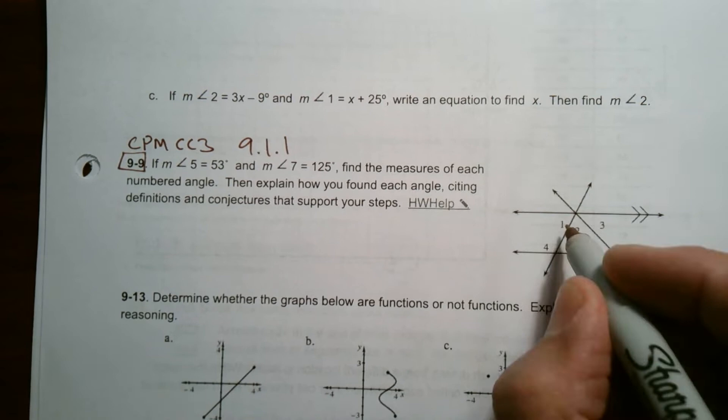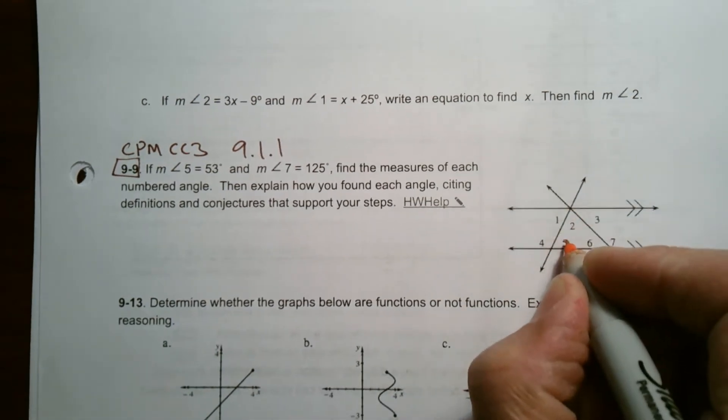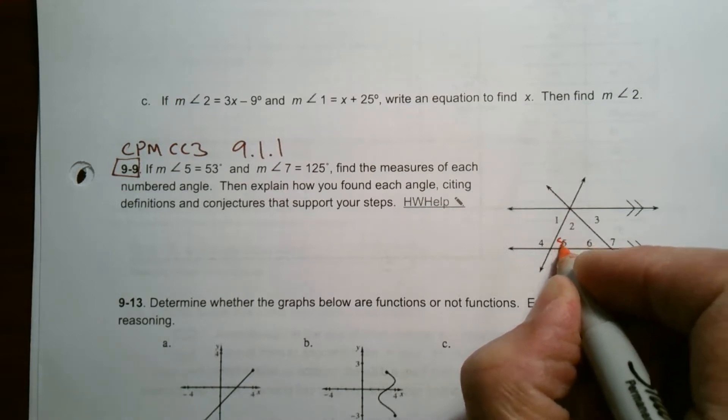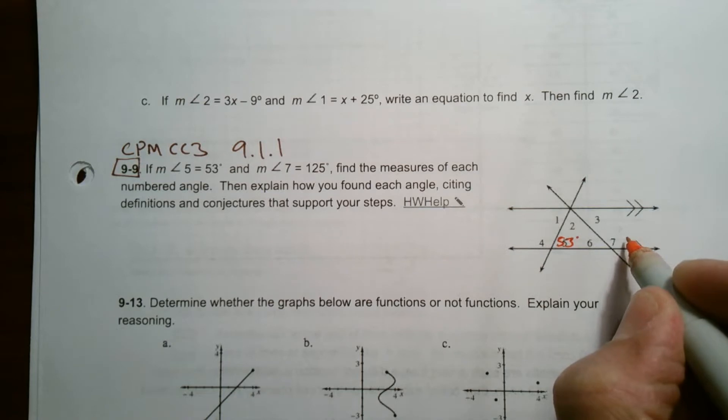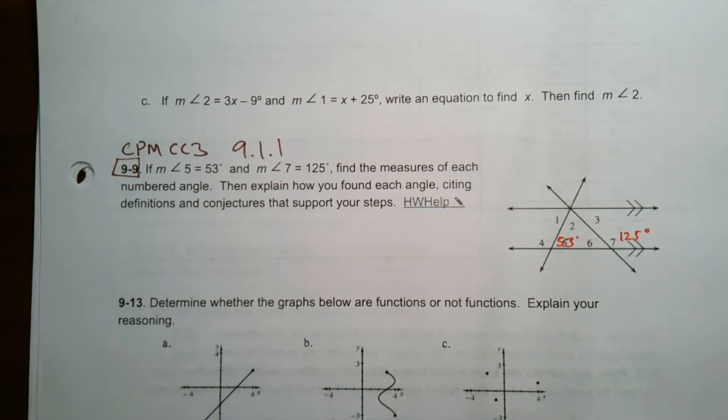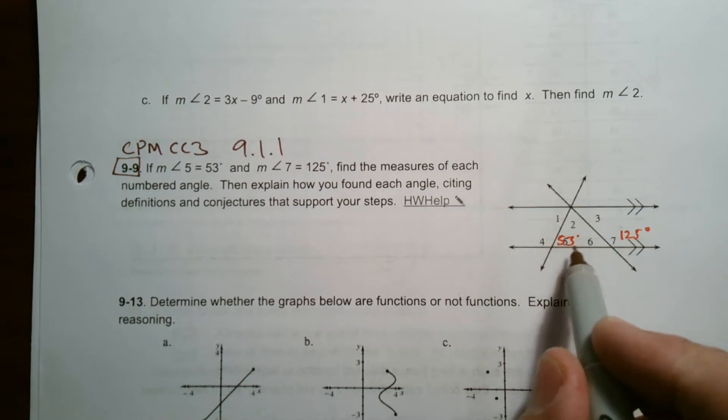We know, and I'm going to put it on here so we see it, we know that angle 5 is 53 degrees. So this is 5, and that's 53 degrees. And angle 7, it says is 125 degrees. So I need to figure out other angle measurements. Well, a couple things I can do.